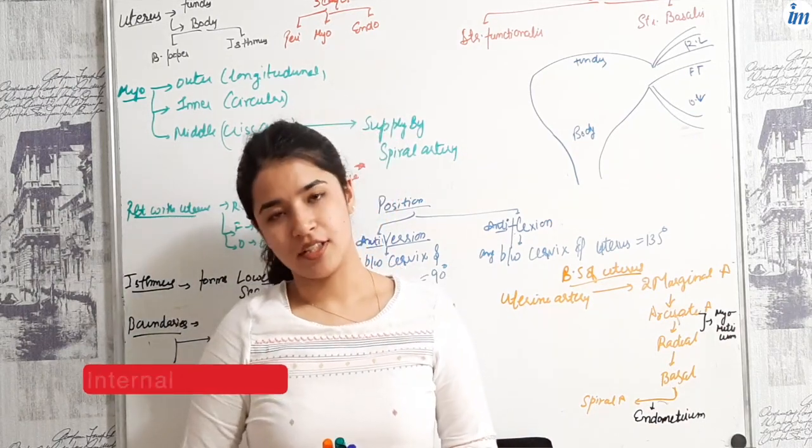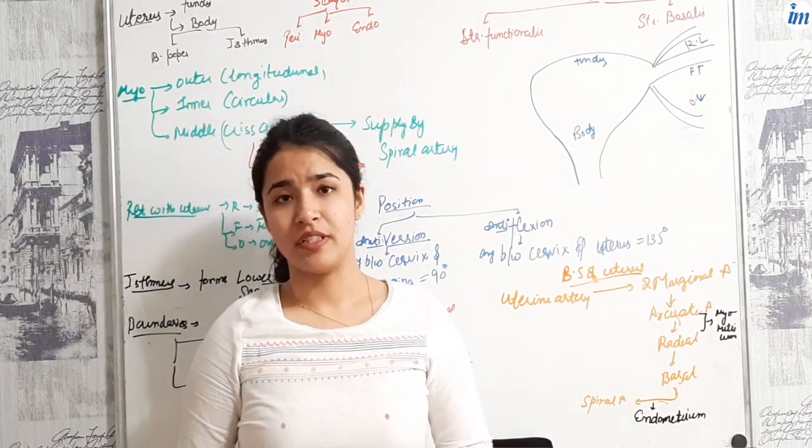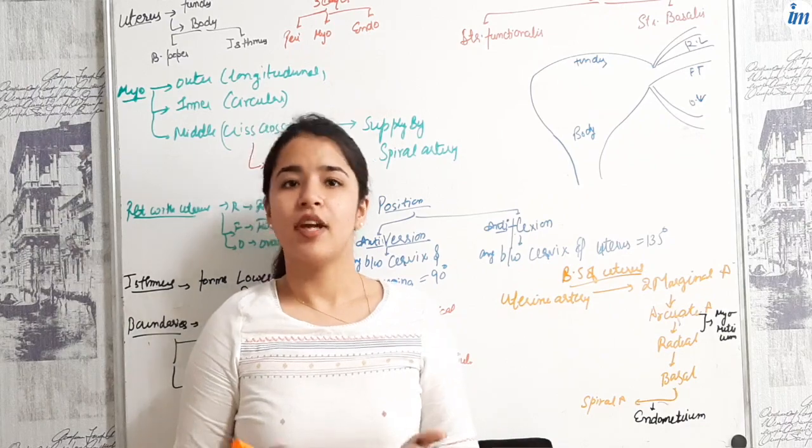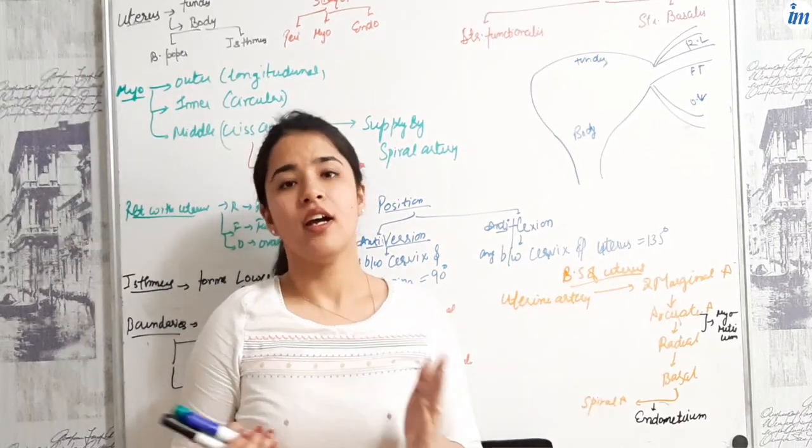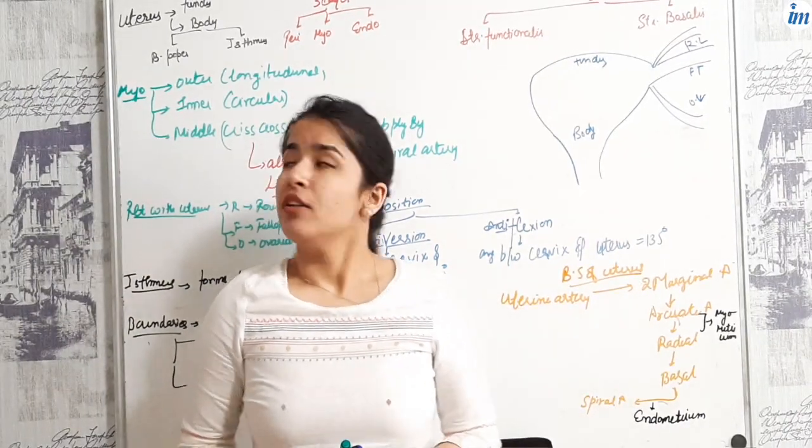What structures are coming in internal genitalia? The uterus, isthmus, cervix, fallopian tube, vagina, and ovaries.